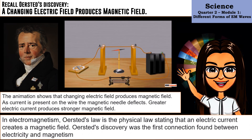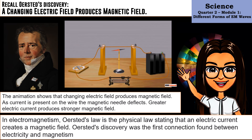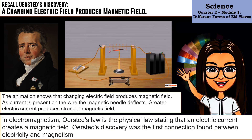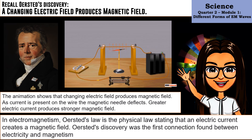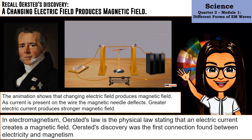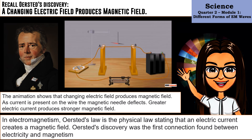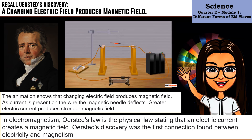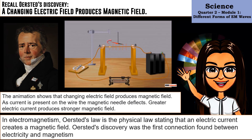The animation shows that a changing electric field produces a magnetic field. As current is present on the wire, the magnetic needle deflects. Greater electric current produces a stronger magnetic field. In electromagnetism, Ersted's law is the physical law stating that an electric current creates a magnetic field. Ersted's discovery was the first connection found between electricity and magnetism.